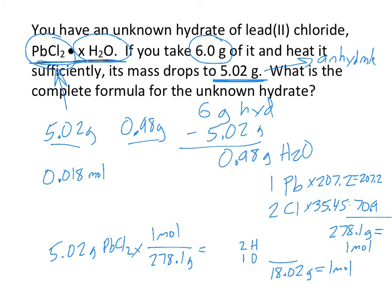So there's 18.02 grams of water for every one mole. So I have 0.98 grams of water. So I would like to know how many moles that is. So 0.98 grams of water for every one mole, there are 18.02 grams. So 0.98 divided by 18.02, I get 0.054 moles.